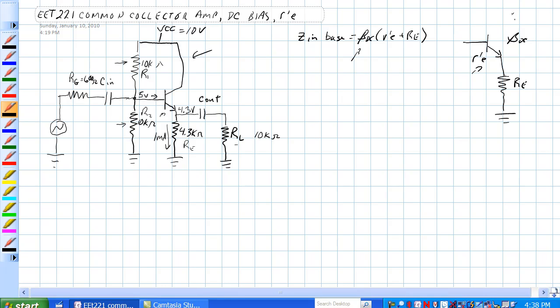Let's say beta is, this is a little bit higher current transistor so beta would be 100. So we have 100 times 25 ohms plus 4.3k ohms.